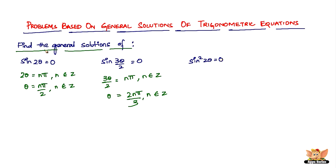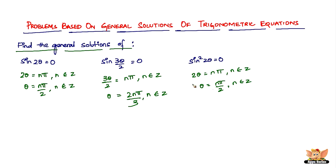The next problem is: find the general solutions of sine square 2 theta equal to 0. In this case, it will be 2 theta equals n pi, where n belongs to integers. So theta equals n pi divided by 2, where n belongs to integers. This is the general solution of sine square 2 theta equals 0.